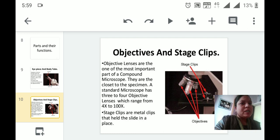Objective lenses are one of the most important parts of the compound microscope and they are very close to the specimen. A standard microscope has three to four objective lenses. The microscopes that are present in our biology lab have three objective lenses: one is of 10x resolution, second is of 40 or 45x, and third one is of 100x. Stage clips are the metal clips that hold the slide in place.